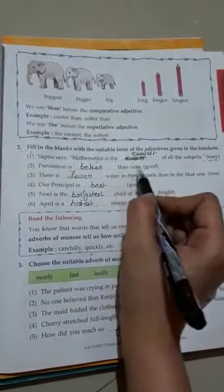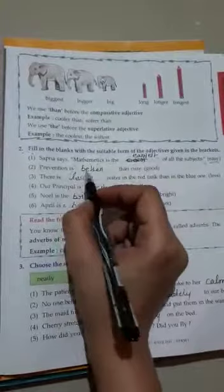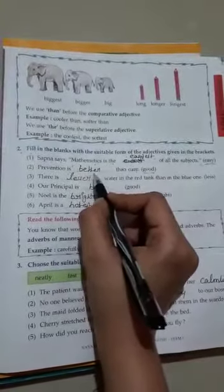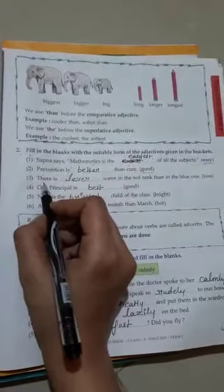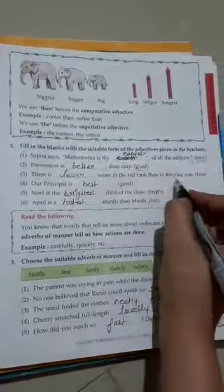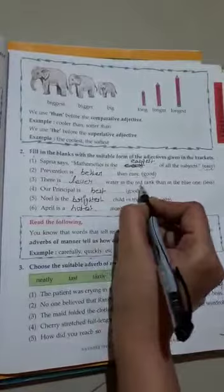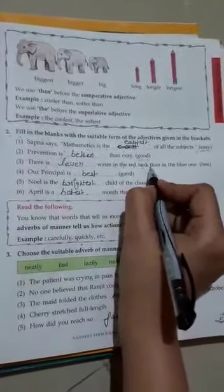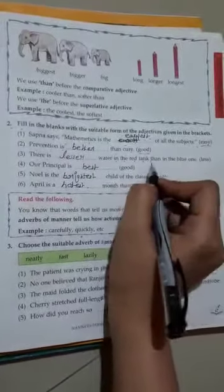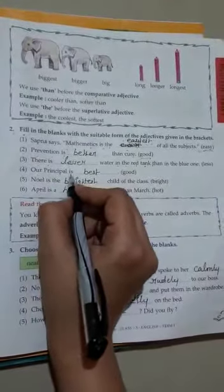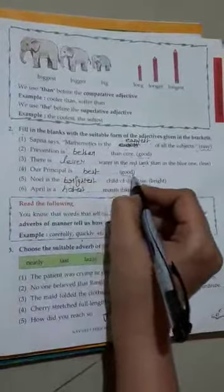Second one: Prevention is better than cure. B-E-T-T-E-R, better than cure. Third one: There is lesser water in the red tank than in the blue one.